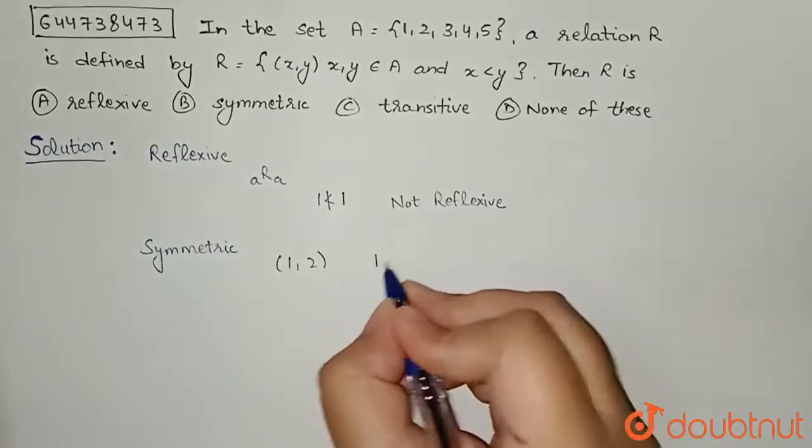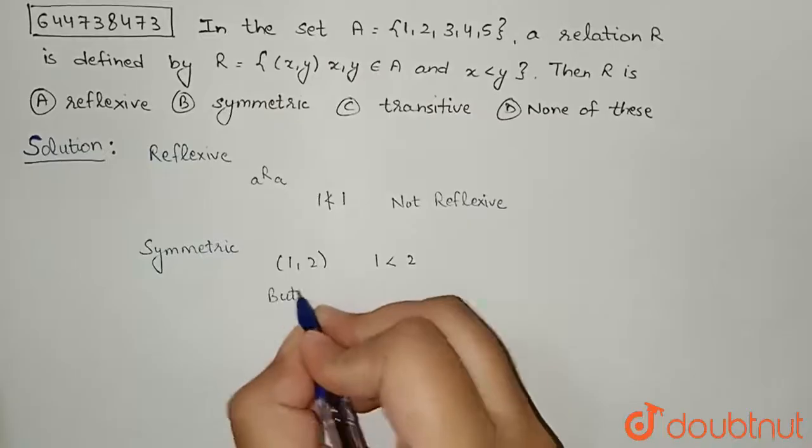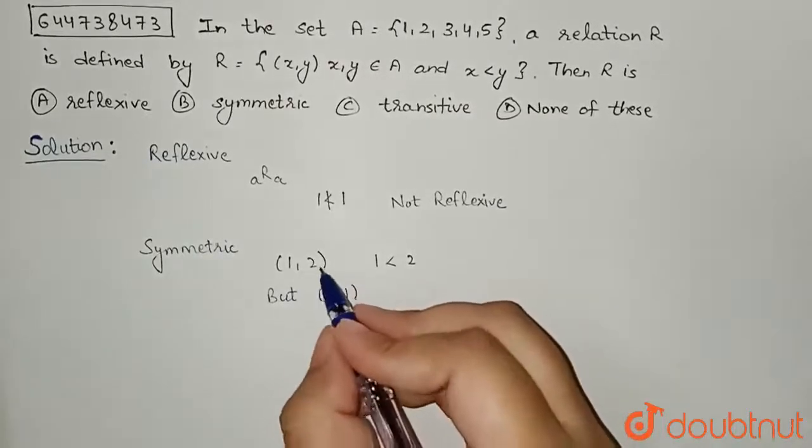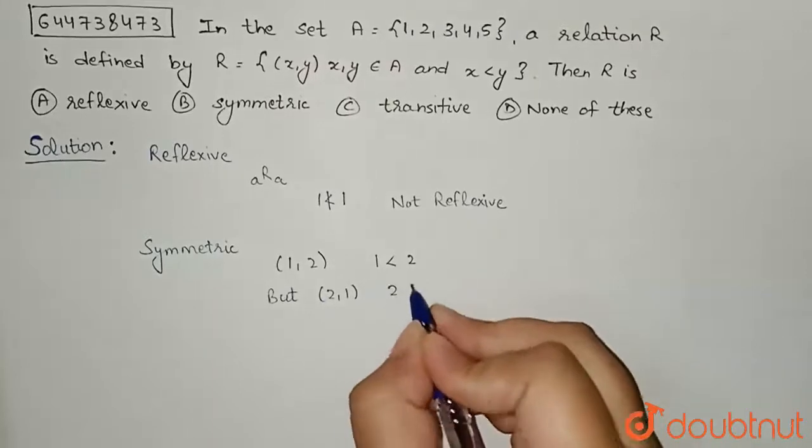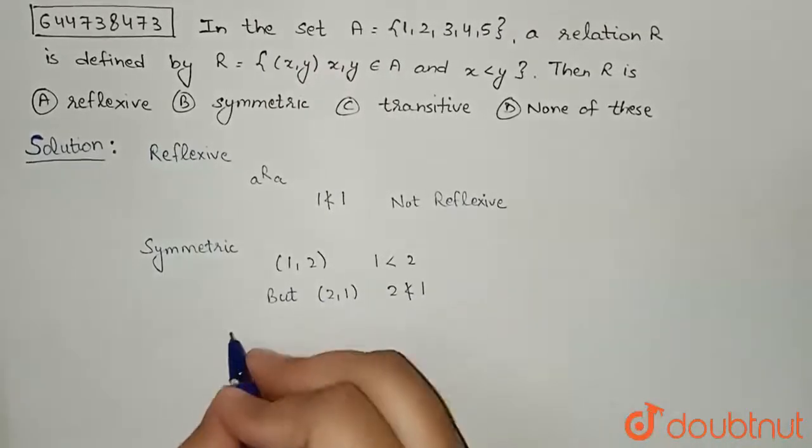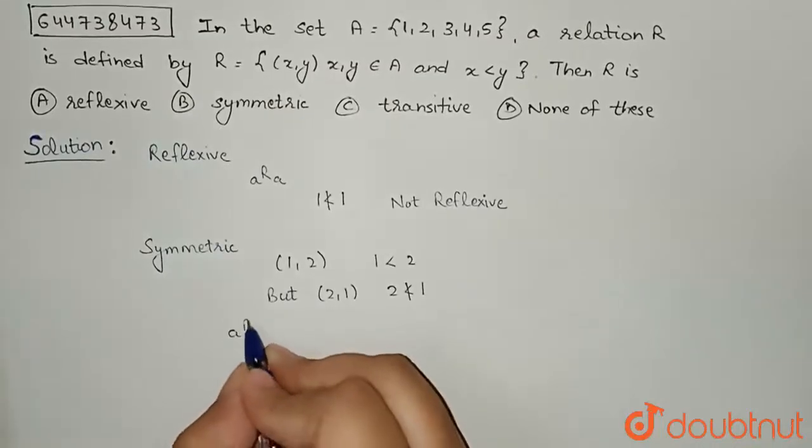We can see that 1 is less than 2, but if we take (2, 1), that is opposite of it, so 2 is not less than 1. Okay, so from here we can conclude that a is related to b.